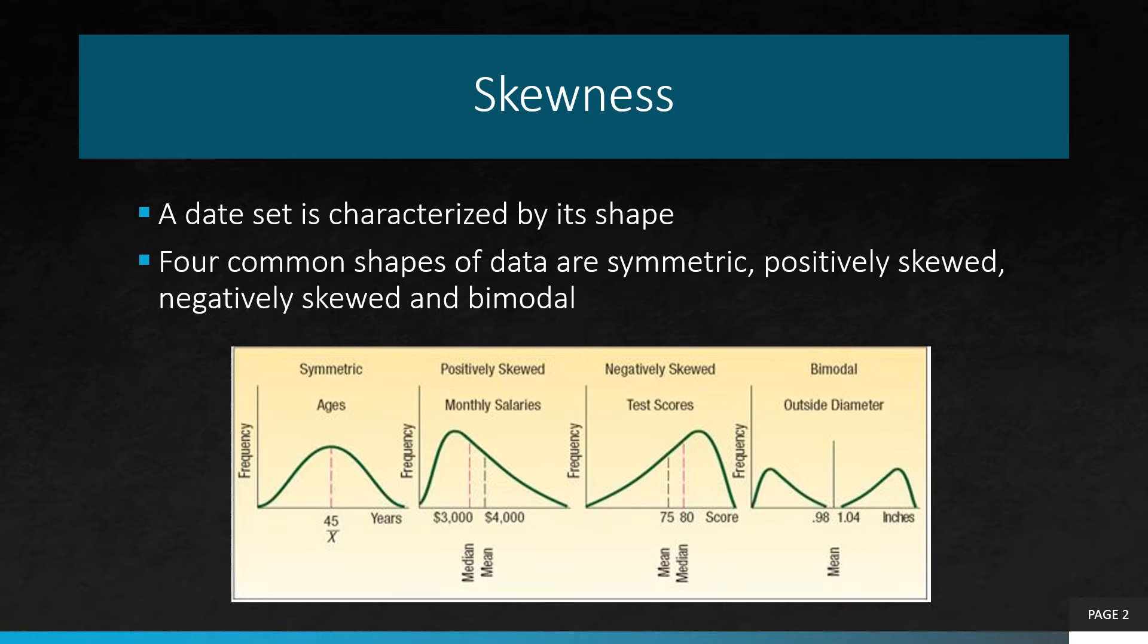Besides central tendency and dispersion, another characteristic of a data set is the shape. There are generally four shapes commonly observed: symmetrical, positively skewed, negatively skewed, and bimodal.